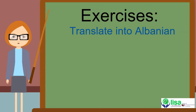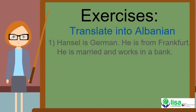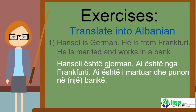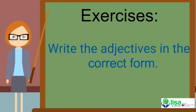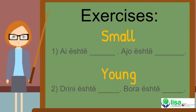Exercises: translate into Albanian. Also, write the adjectives in the correct form. Examples: small and young — ai është i vogël; ajo është e vogël; Drini është i ri; Bora është e re.